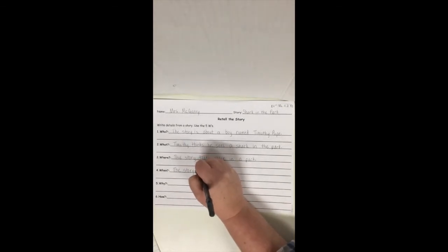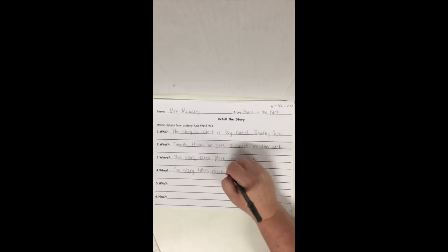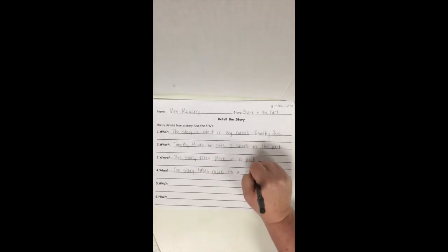When? This is another part that doesn't always say. But if I look at the pictures, I can tell it's not nighttime, it's daytime. So I'm going to say it takes place on a sunny day. The pictures can help you a lot. Okay. Now I'm continuing to make sure all of my answers are written in complete sentences. I have capital letters and periods. I have good word spaces. I have an extra line that I can go back and write details in later if I wanted to get a higher grade.